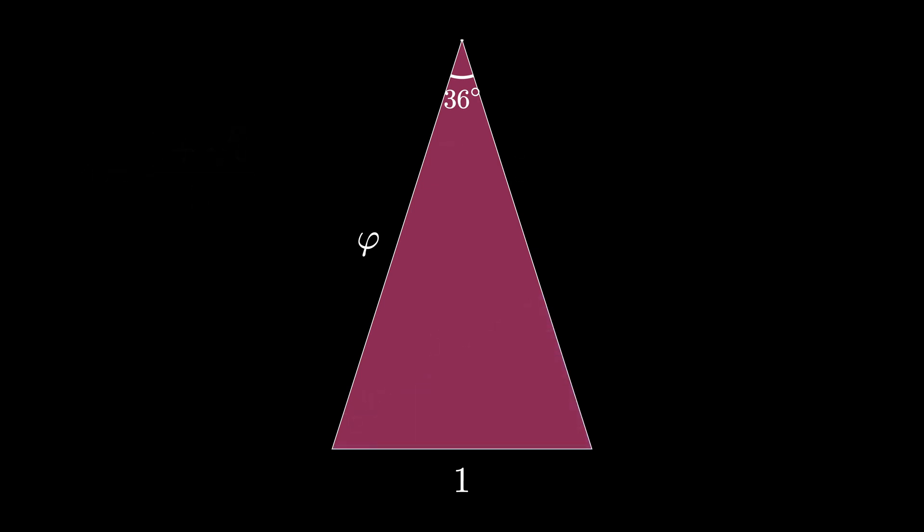Now slice the 36 degree angle in half, creating a triangle shown here with an 18 degree angle, a base length of 1 half, and a hypotenuse of length the golden ratio. From this right triangle, we conclude that the sine of 18 degrees is equal to 1 divided by 2 times the golden ratio.